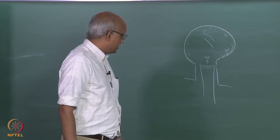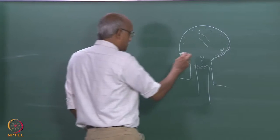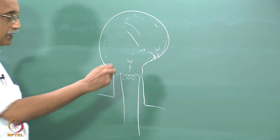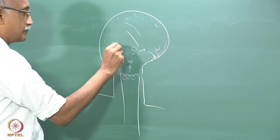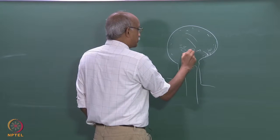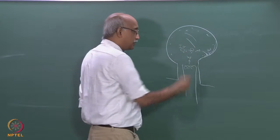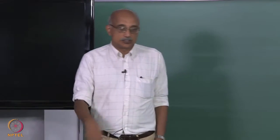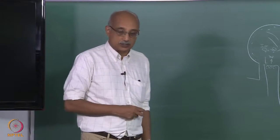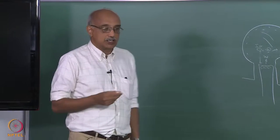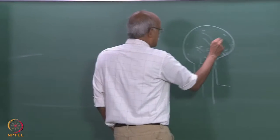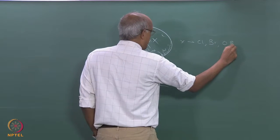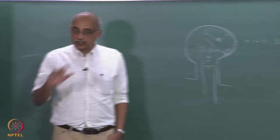The problem is when tungsten evaporates it has a tendency to diffuse and deposit on the bulb walls. By providing inert gas molecules inside — because of the collision between the tungsten vapor molecules and the inert gas molecules — you can direct some of the tungsten vapor molecules back towards the filament and thereby slow down the rate of deposition. But the major revolutionary change was introducing halogens X, where X could be Cl, Br, or even oxybromides, into the bulb before it is sealed up.